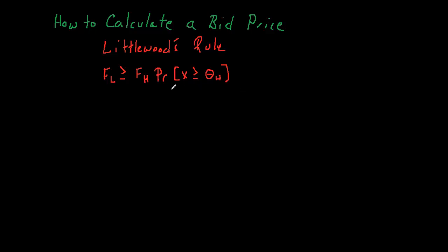Let's look at how to use Littlewood's Rule to calculate the expected value or the opportunity cost that we said was the bid price in our example. Just a quick refresher on how to read this rule. We said that there were only two fares in the market: a low fare and a high fare. We could use Littlewood's Rule as a control mechanism by comparing the lower fare being offered to the expected value from saving the next seat for a higher fare customer.